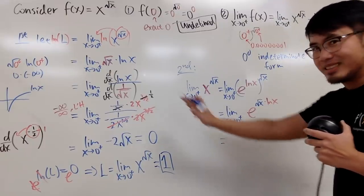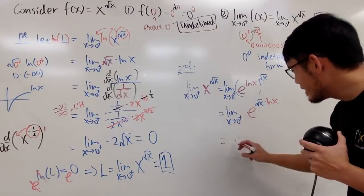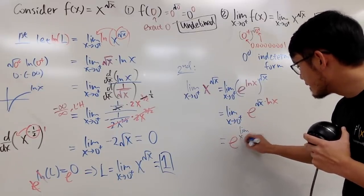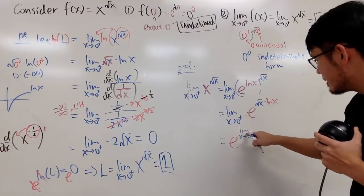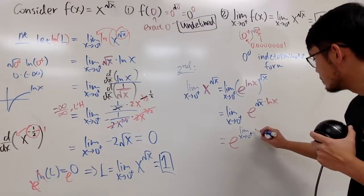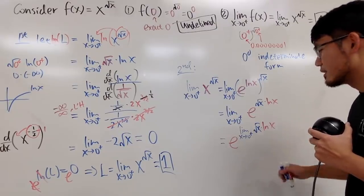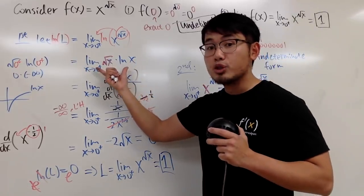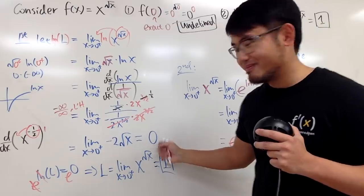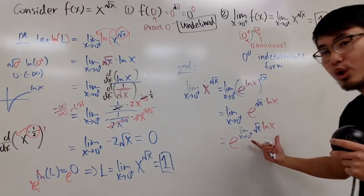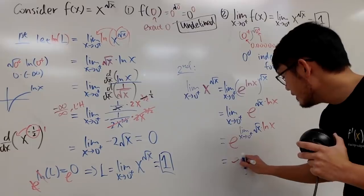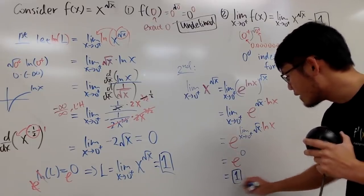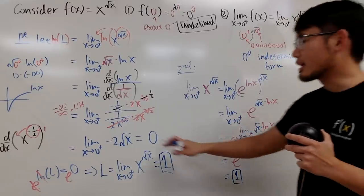When you take the limit of e to the something, it equals e to the limit of something, because e to the something is a continuous function. So this is e to the limit as x approaching 0 plus of square root of x times ln(x) — and that inner limit is the same expression we already computed, which equals 0. So you get e to the 0, which is 1 right away.